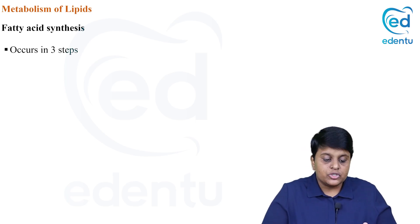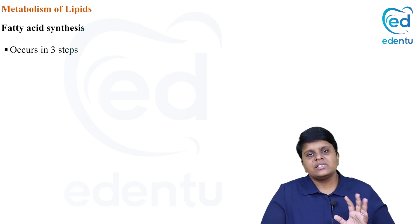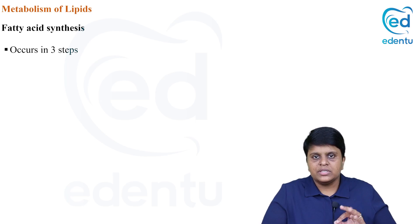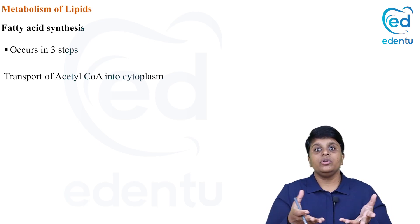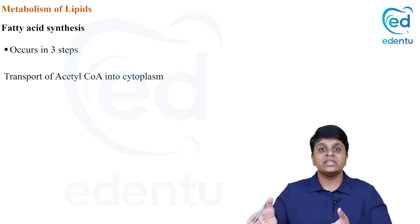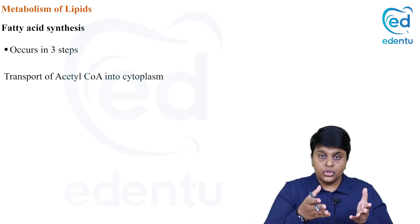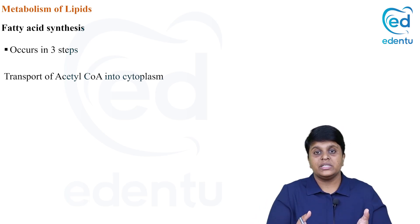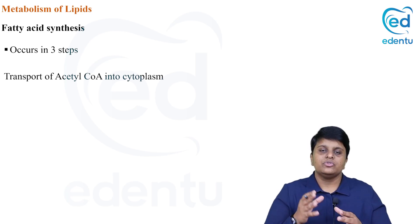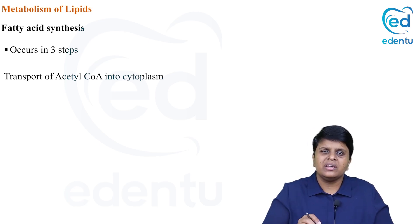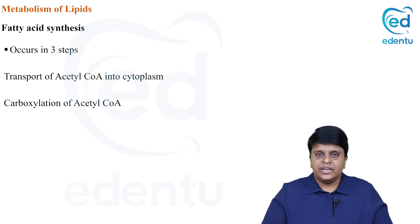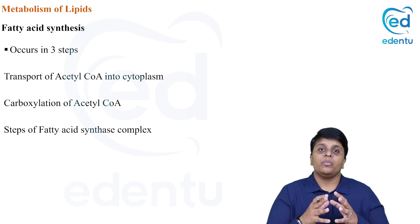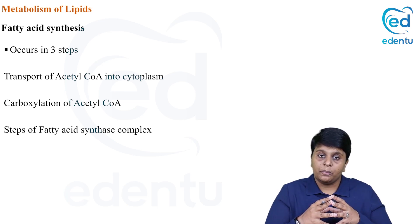What are the steps of fatty acid synthesis? As in fatty acid oxidation, there are three steps. The first is transport — acetyl-CoA is inside the mitochondria but fatty acid synthesis occurs in the cytoplasm, so you need to bring all the acetyl-CoA into the cytoplasm via a shuttle mechanism. Then you carboxylate the acetyl-CoA, adding one more carbon to make it a three-carbon compound. Finally, you have the proper steps of the fatty acid synthase complex.